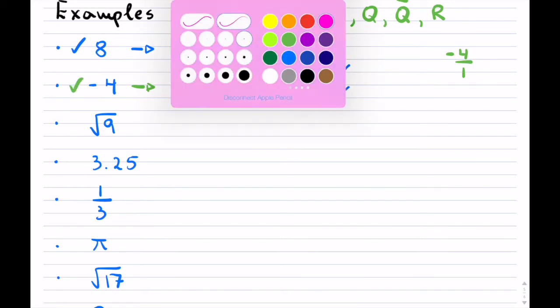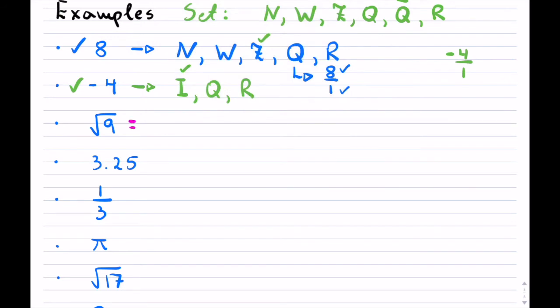This third example, you have to be careful a little bit, because this is a perfect square which equals 3, and we'll assume that it is positive.